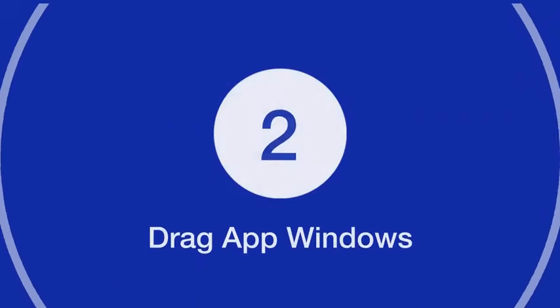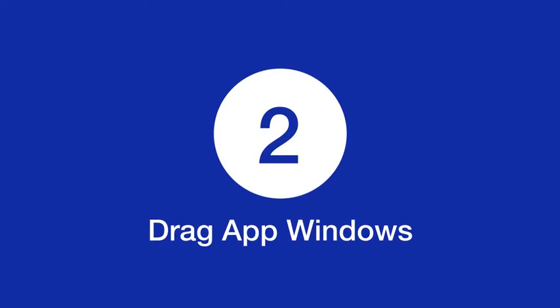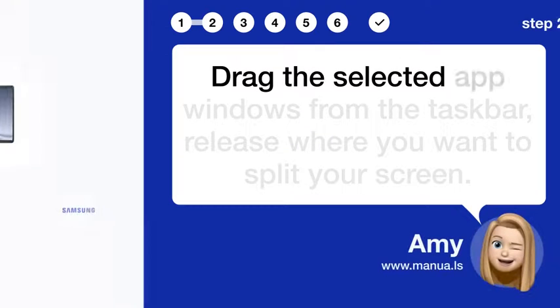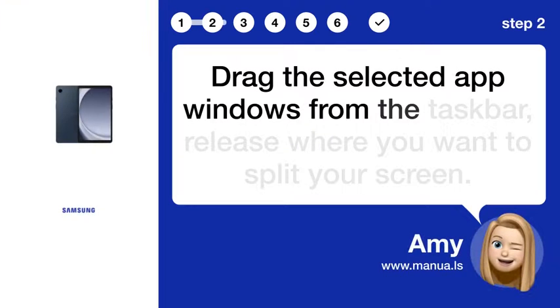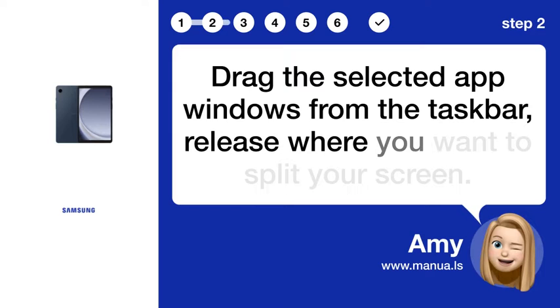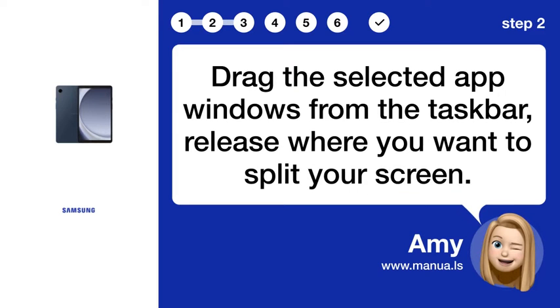Step 2: Drag app windows. Drag the selected app windows from the taskbar, and release where you want to split your screen.